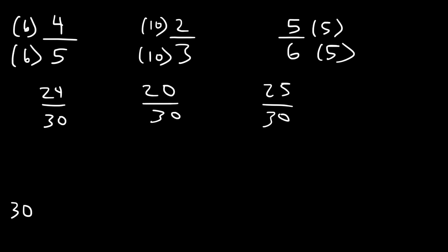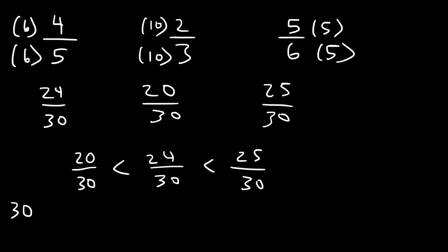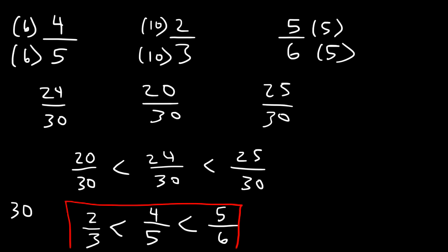So if we rank them in order: 20 over 30 is the smallest, then 24 over 30, then 25 over 30. Putting them back in original form: 20 over 30 corresponds to 2 over 3, which is less than 24 over 30, which corresponds to 4 over 5, and that's less than 25 over 30, which is 5 over 6. That's how you can compare and order fractions from least to greatest.